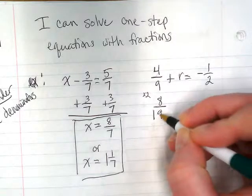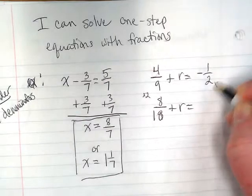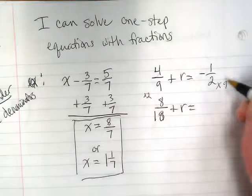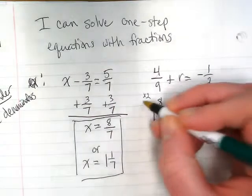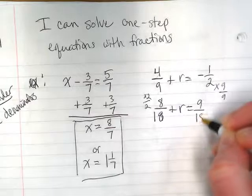I'm sorry, 8 over 18, plus R, equals. For this one, we're going to multiply both the numerator and denominator by 9 over 9. So I end up with 9 over 18.